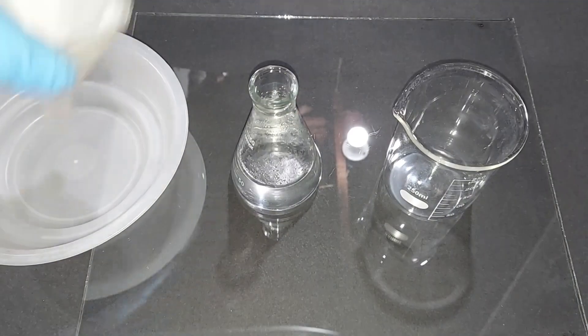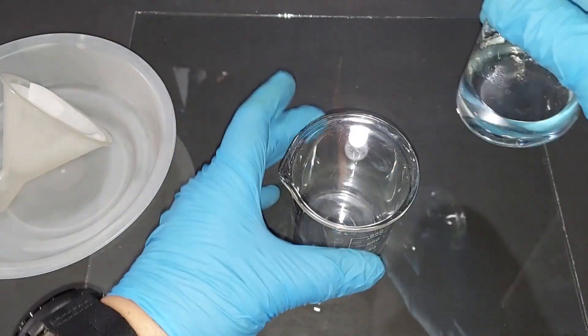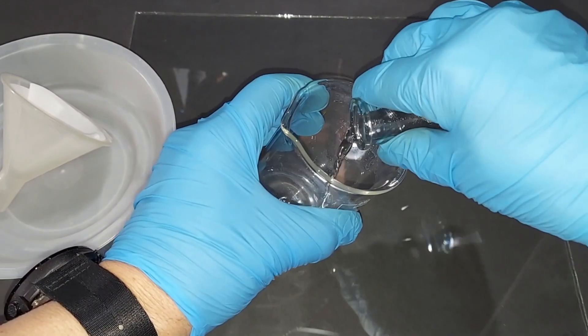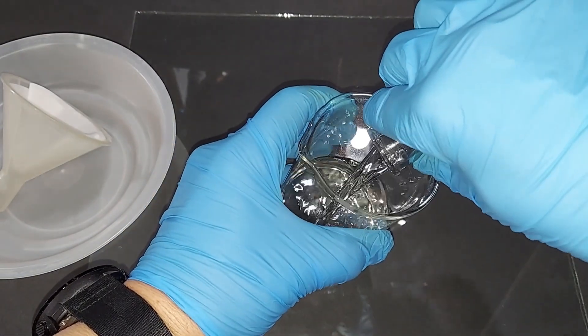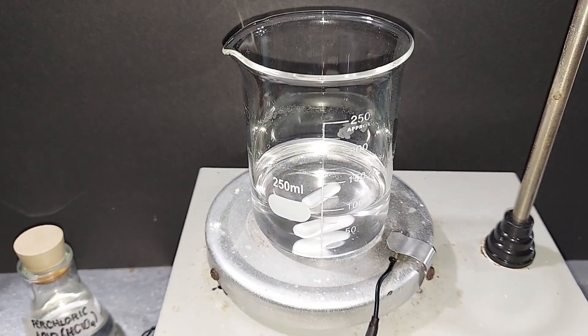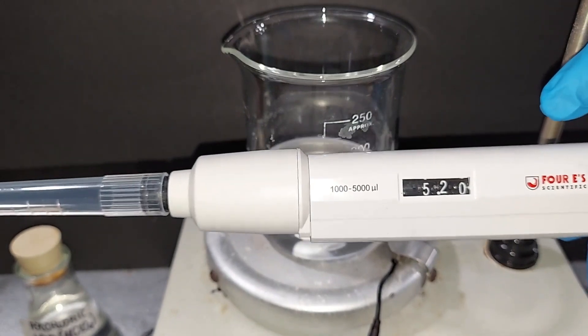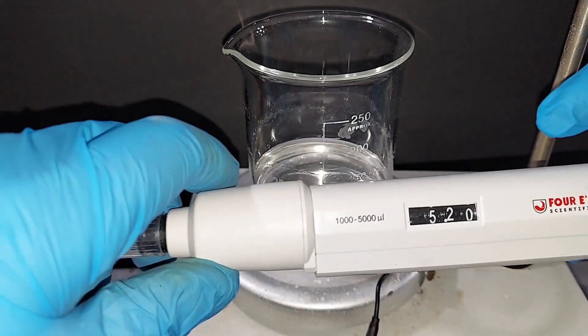Filtration is done and because we now need to add the perchloric acid, I'm going to put this back into this. You can see how clear the solution is now. Time to add the perchloric acid. Here I have a micro pipette set to 5.2 milliliters. Honestly without this I wouldn't get it right but this is what we're using.